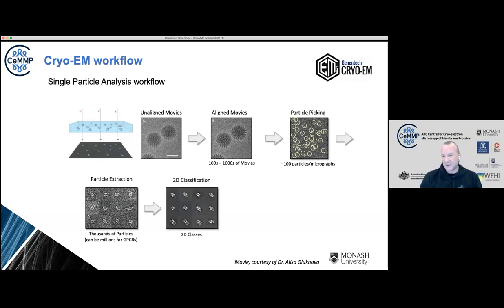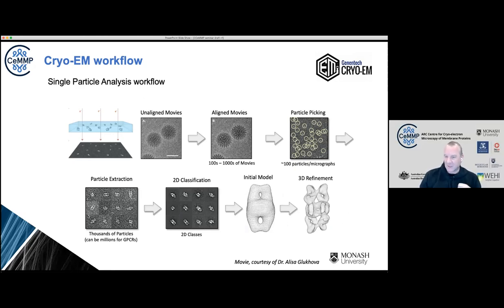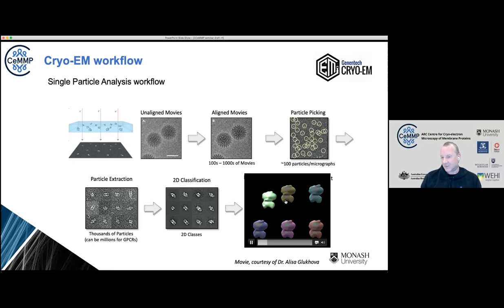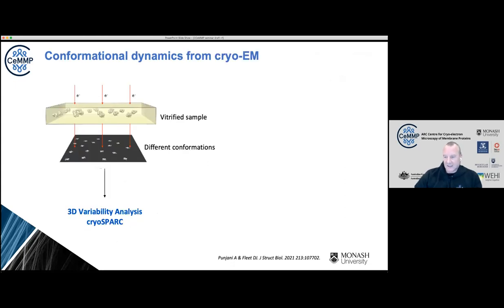We then try to classify those images — get 2D classes — and progressively through iterative processes work out which ones are indeed the same and back-calculate a three-dimensional map. This generally starts with a low-resolution model, and as we improve alignments and back-calculations we get improvements in resolution. You can see this progression — starting with a crude blob, through to something that vaguely looks like a GPCR complex in a micelle, through to densities where you can clearly see the receptor protein, the micelle, and the G-protein.